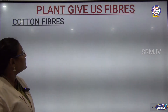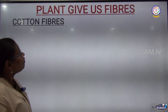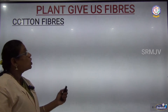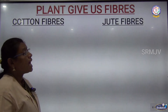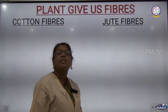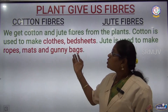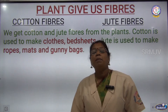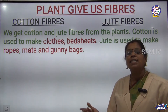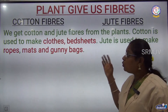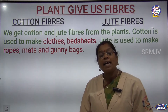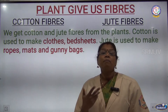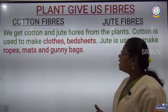Plants also give us fibers. Cotton fibers are used to make clothes, bed sheets and covers. Jute fibers are used to make ropes, mats and gunny bags.